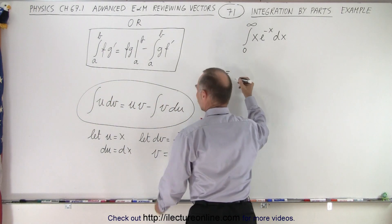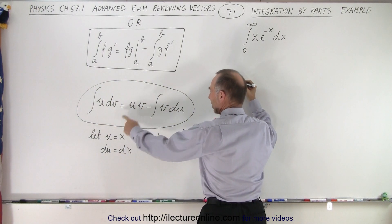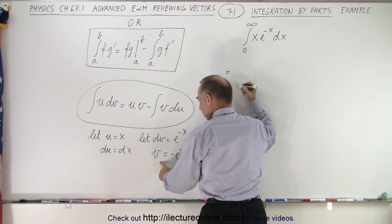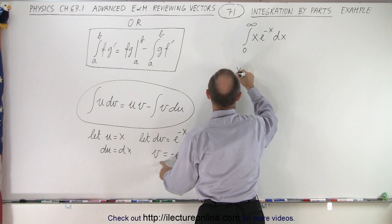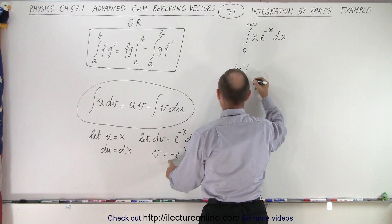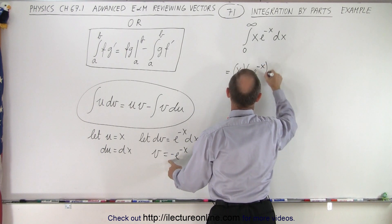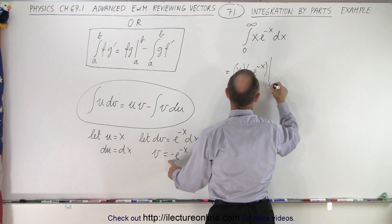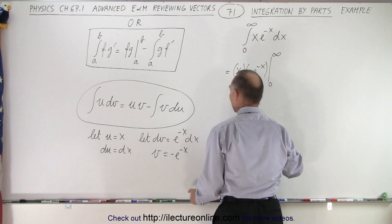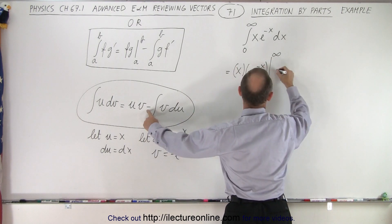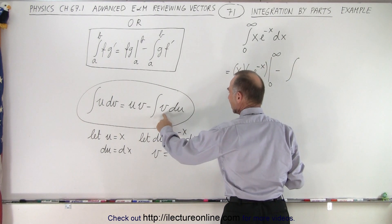So this becomes equal to u times v. So we have u times v. So that would be x times a minus e to the minus x evaluated from 0 to infinity. And then we subtract from that minus the integral of v du.